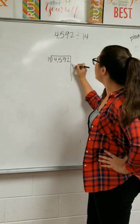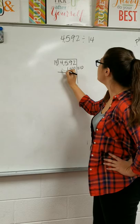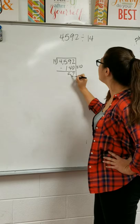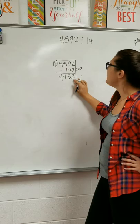14 times 10 would be 140 and I'm going to subtract that. Say 2 minus 0 is 2, 9 minus 4 is 5, 5 minus 1 is 4 and bring down my 4.